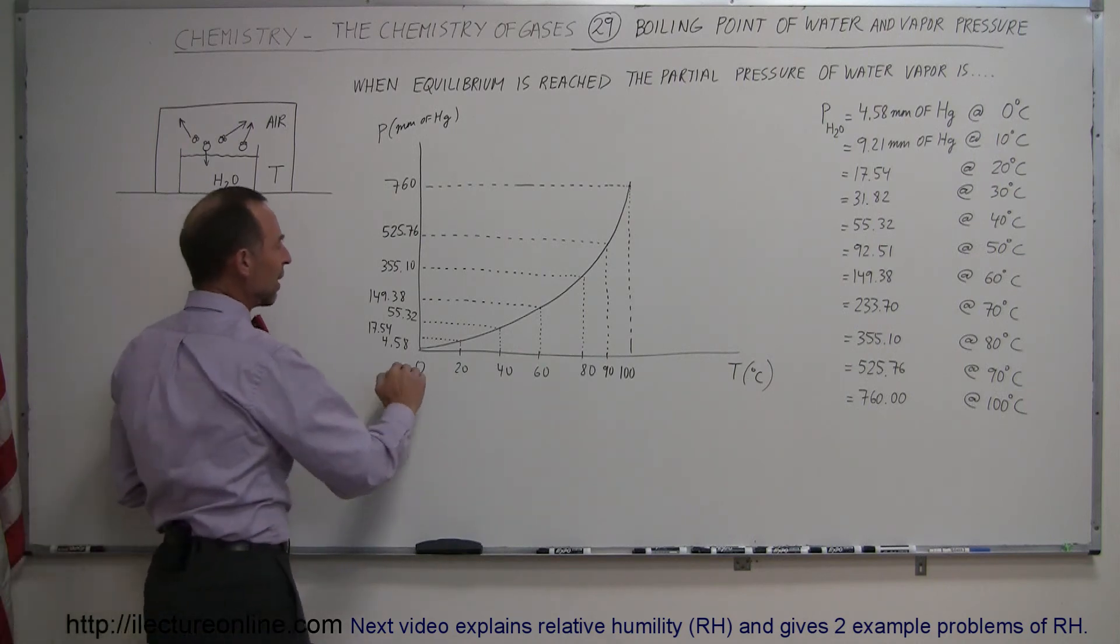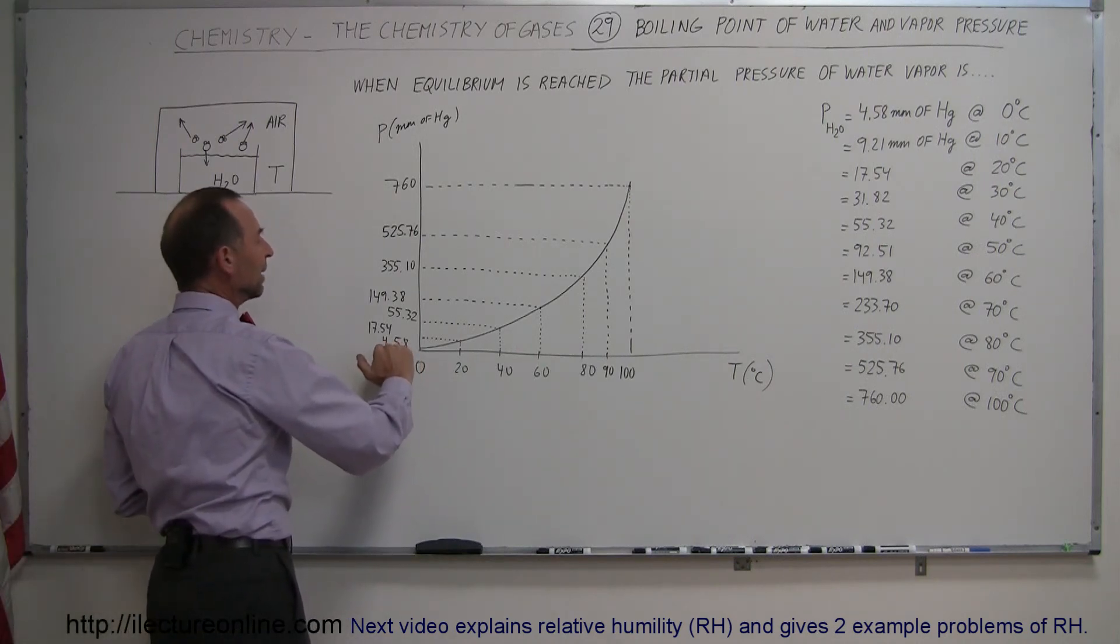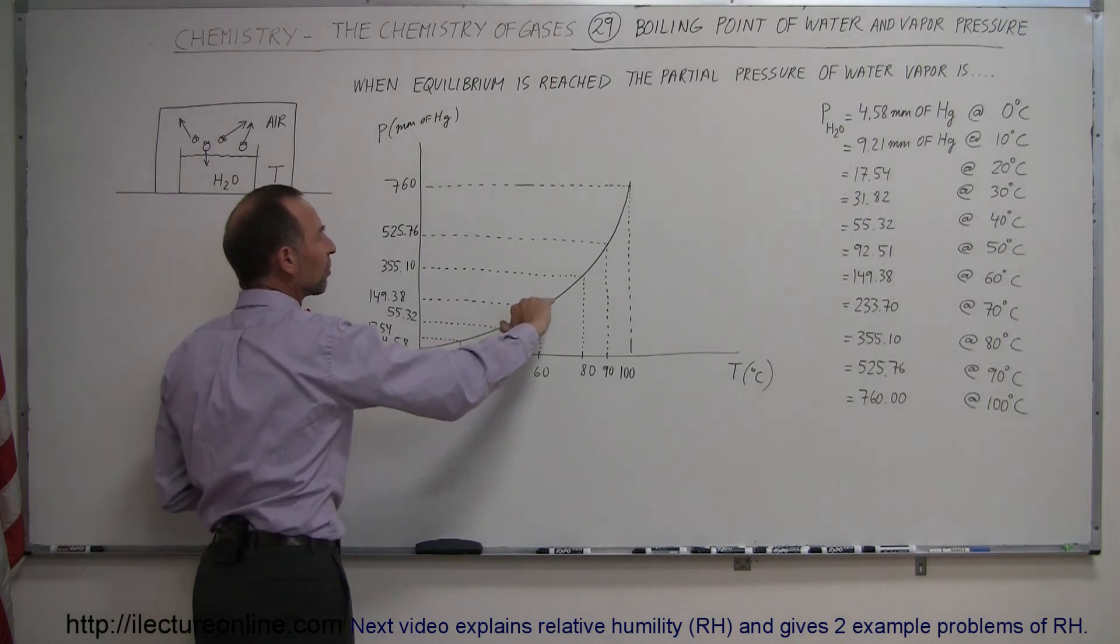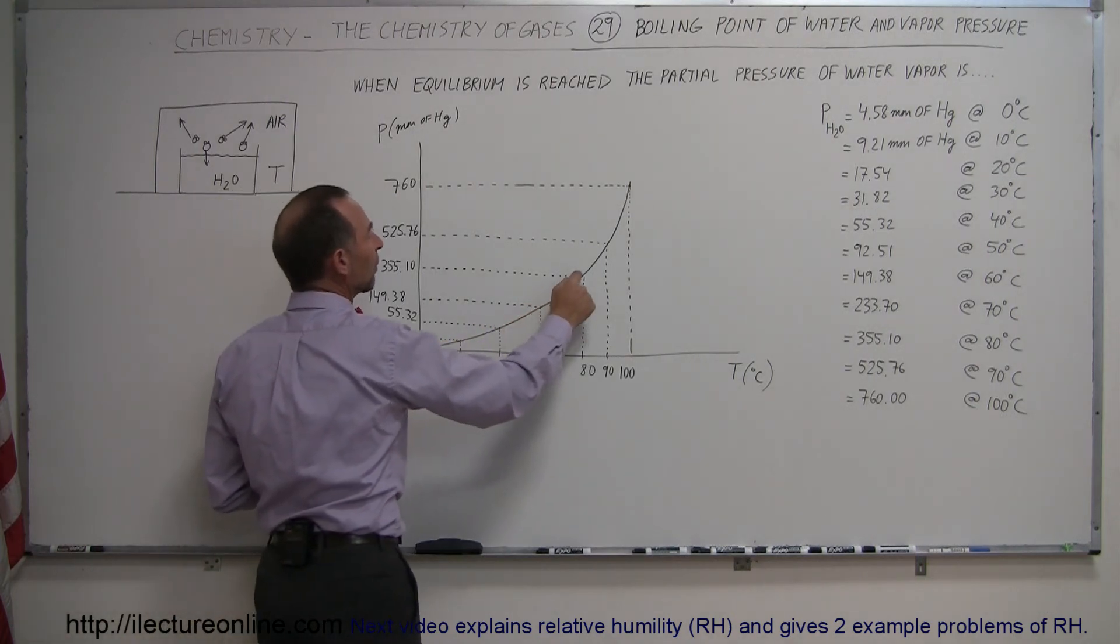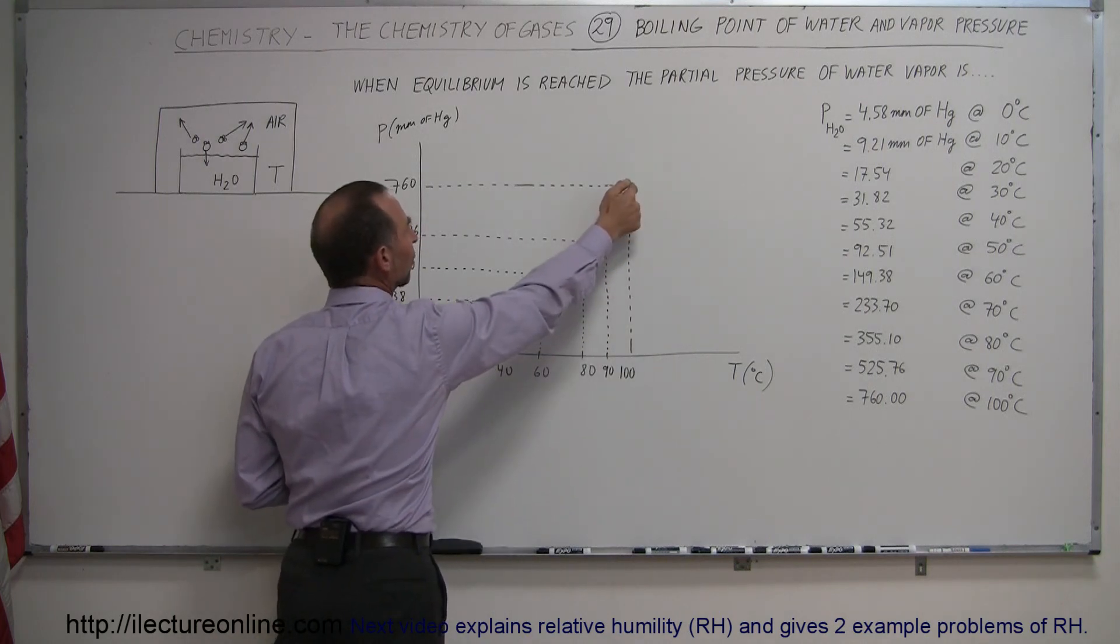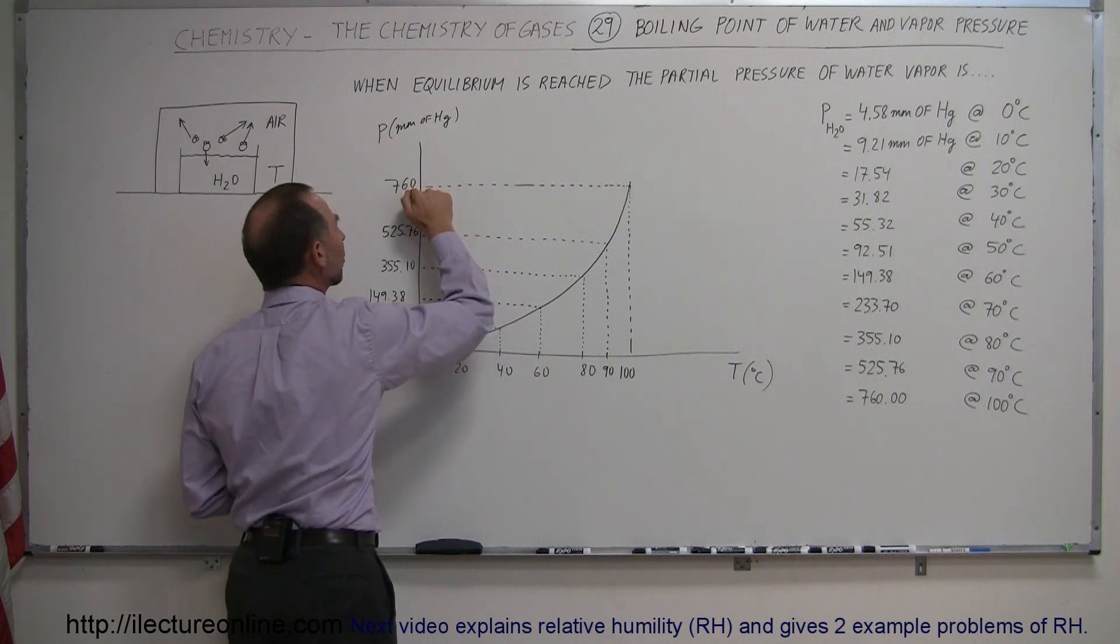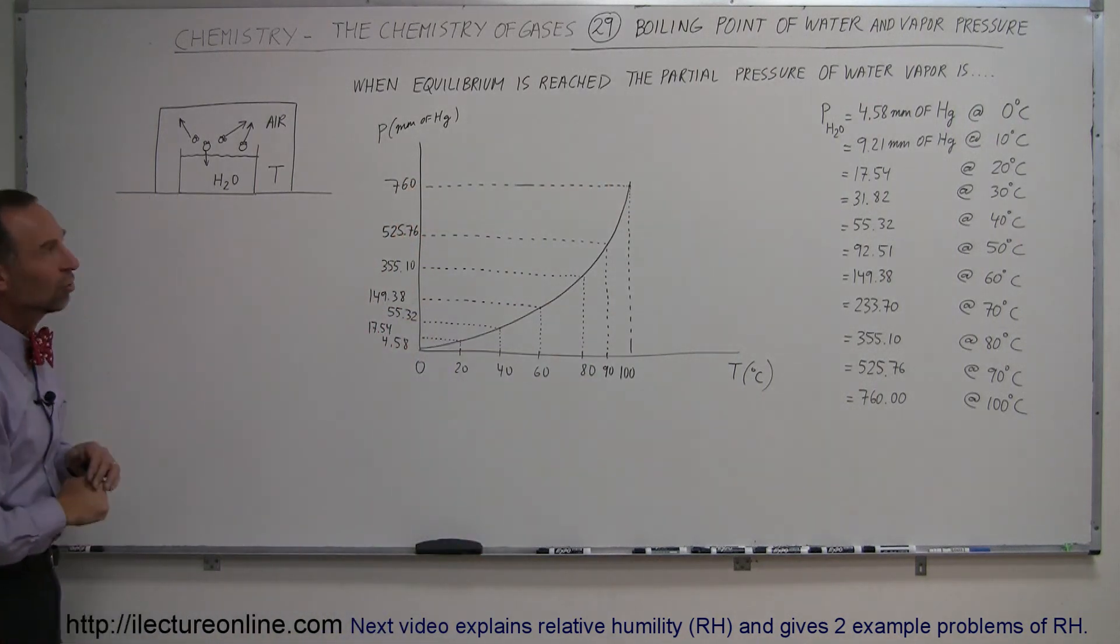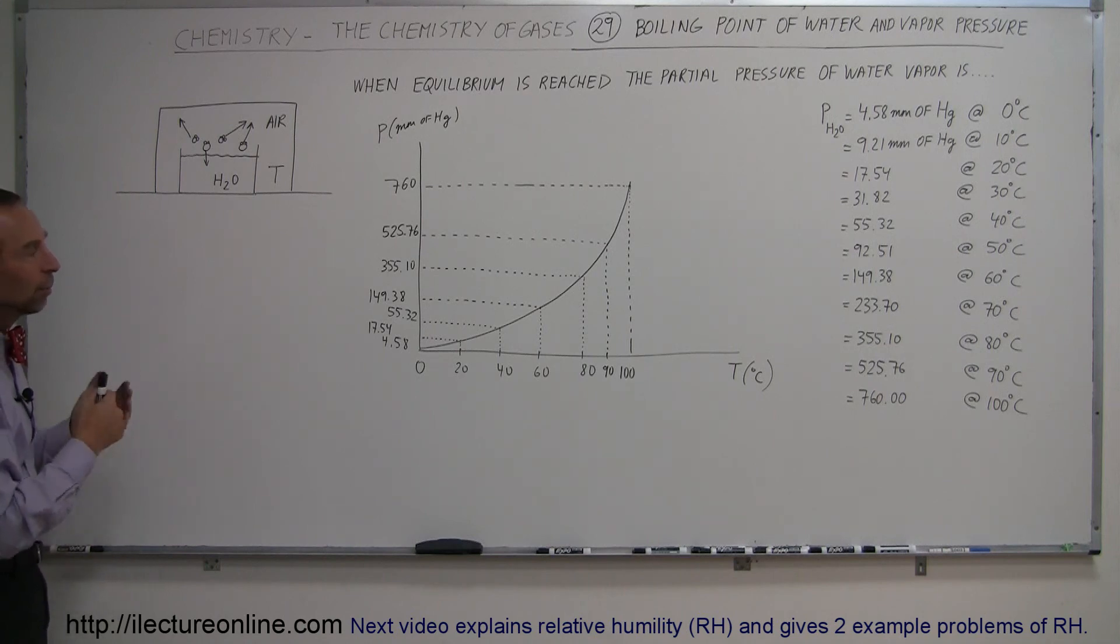But notice again that the amount of moisture that can be held in the air is simply a function of the partial pressure, which increases as a function of temperature. And when that temperature reaches high enough so that the partial pressure of the water vapor can be the full pressure, at that point, water will boil. And so there you can see the relationship between vapor pressure and the boiling point of water.